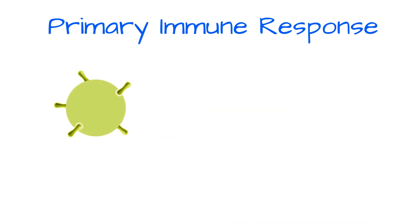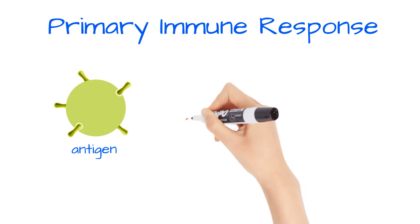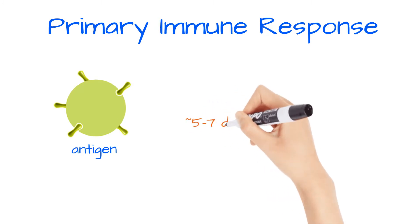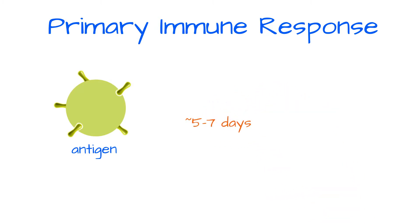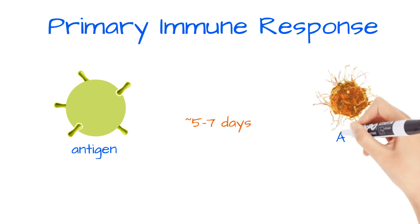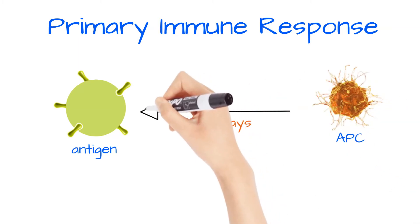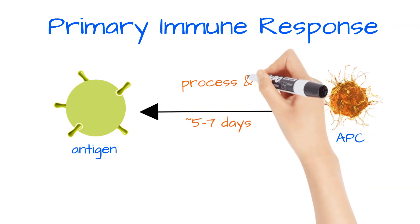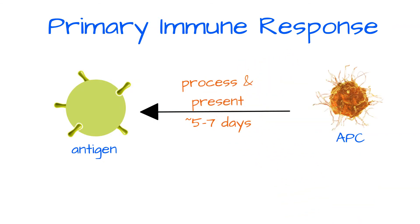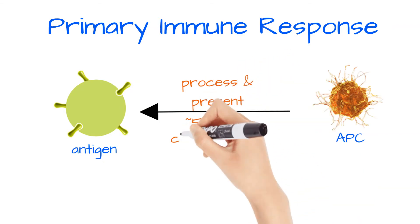When our immune system first encounters an antigen, there is a five to seven day lag period. During this time an APC, or an antigen presenting cell, performs antigen processing and this leads to the clonal selection process.